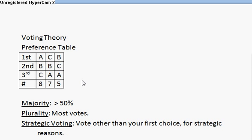Now we're going to define a couple of terms. Majority — we hear this a lot, majority rules. Majority is greater than 50%; you have to have more than 50% for a majority. And many times we don't really have majority rules — we have plurality. Plurality means the most votes wins, but a plurality could be less than a majority win as well.